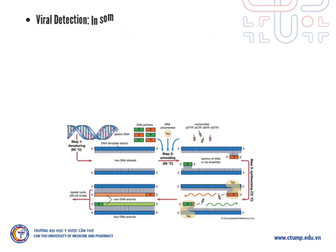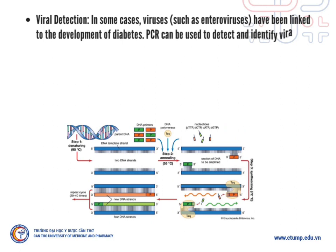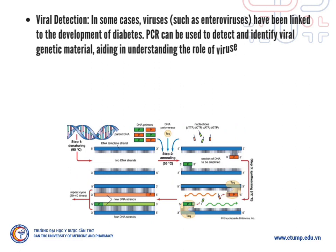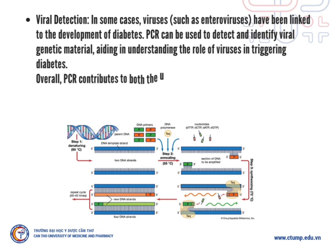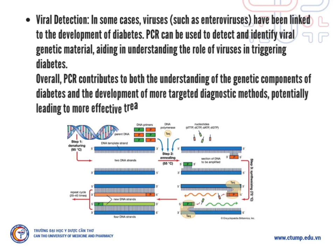Viral detection: In some cases, viruses have been linked to the development of diabetes. PCR can be used to detect and identify viral genetic material, aiding in understanding the role of viruses in triggering diabetes. Overall, PCR contributes to both understanding of the genetic component of diabetes and the development of more targeted diagnostic methods, potentially leading to more effective treatments and interventions.